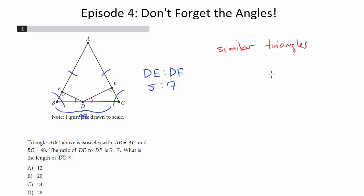And in some sense, they already kind of hinted at that by telling us that the ratio of ED to DF is five to seven. So if these two triangles are similar, then all of their sides are in proportion, and this is the proportion that they're in. They're in the five to seven ratio. So what we can do is we know then that BD and DC are in a five to seven ratio.